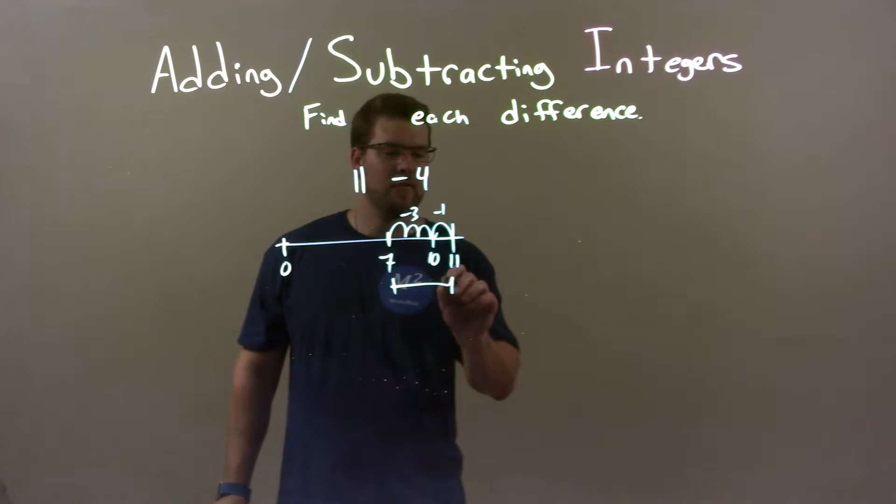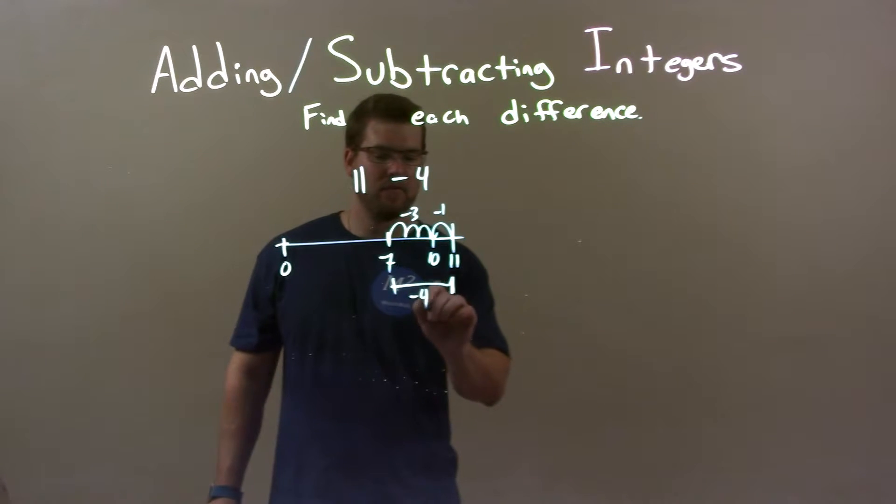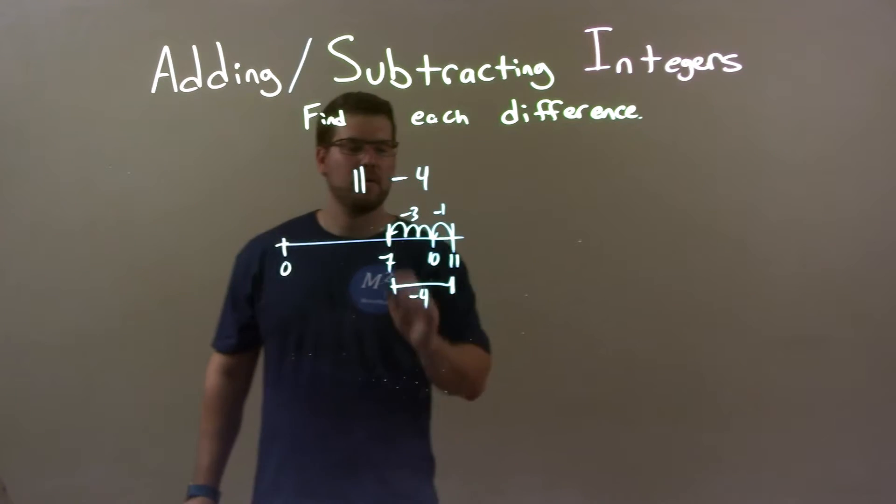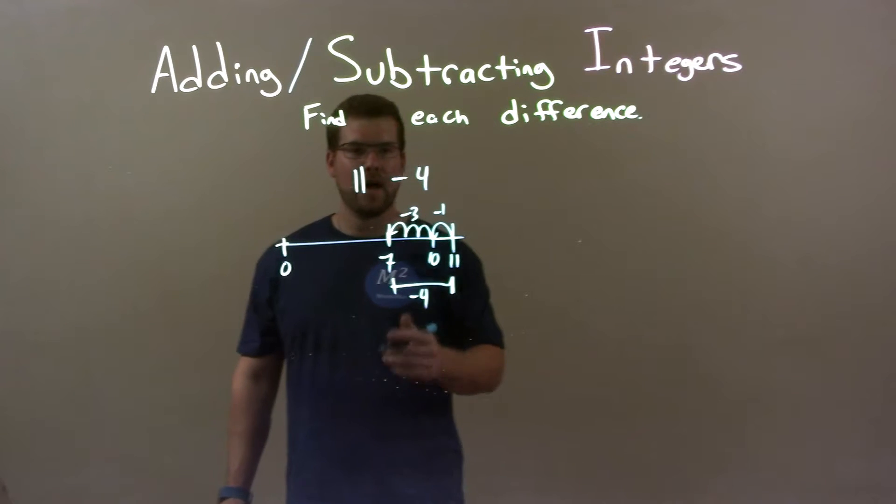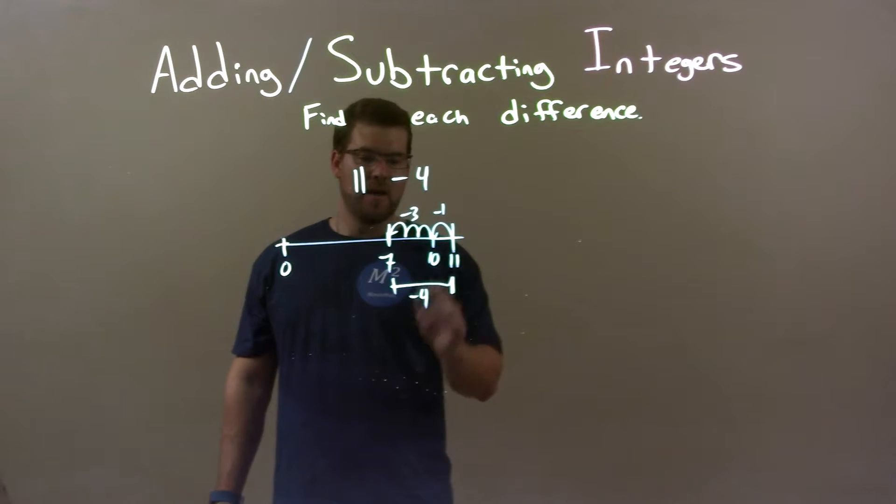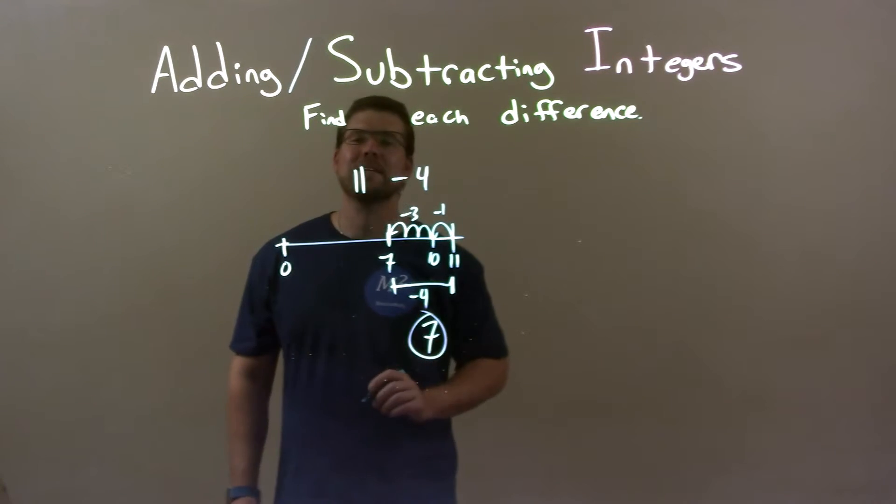And negative 3 and a negative 1 together come to be a negative 4. So when I move a total of negative 4 units to the left from 11, I get a final answer of 7.